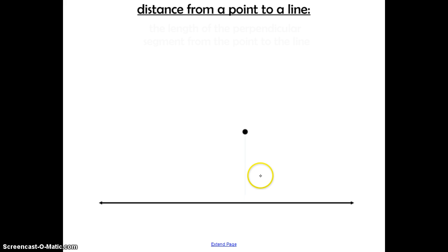When you're trying to find the distance from a point to a line, you need to determine which length you're actually looking for. From this point to this line, there are several different distances that we can draw.